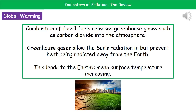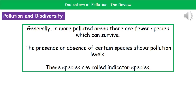The second problem is global warming. When we burn fossil fuels we release greenhouse gases like carbon dioxide into our atmosphere. Those greenhouse gases allow the sun's radiation in but prevent heat being radiated away from the earth back into space. As a result, we see earth's mean surface temperature increasing, which can have some very damaging effects.